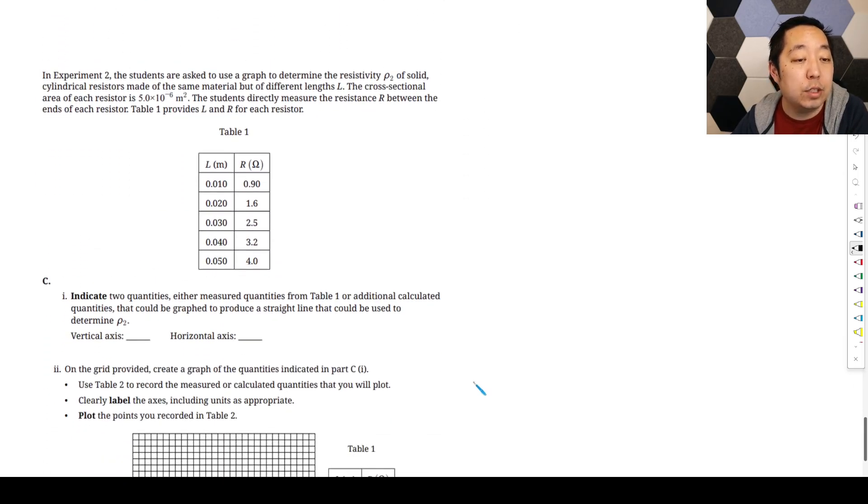Alright, experiment two. The students are asked to use a graph to determine the resistivity of a solid cylindrical resistor made of the same material but different lengths. So now we're going to vary the length. The cross sectional area is given. The students directly measure the resistance R between the ends of each resistor. Table one provides L and R for each resistor.